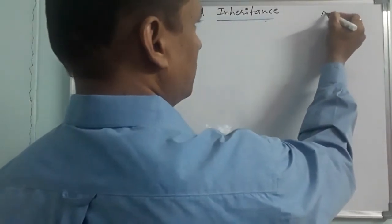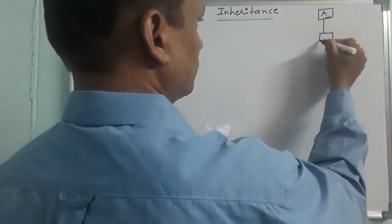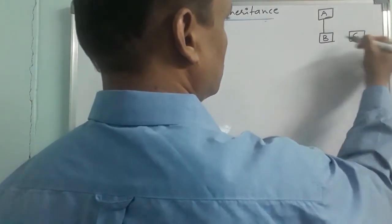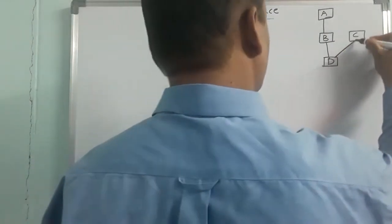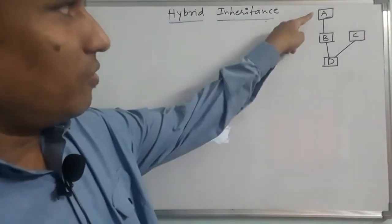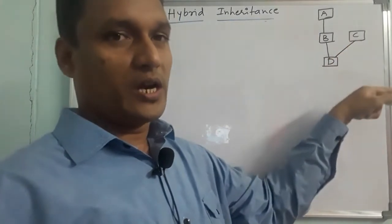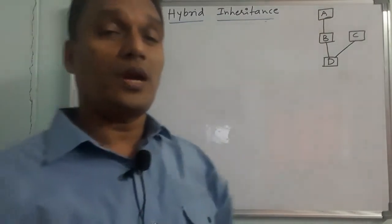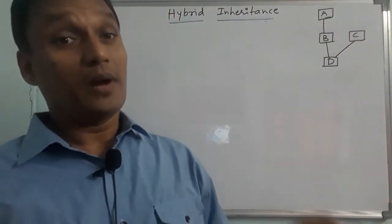For example, class A, class B, class C, class D. If we look at this combination: it's multi-level, it's multiple inheritance, it's single inheritance. So there are three types combined — single, multilevel, and multiple inheritance.